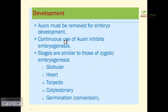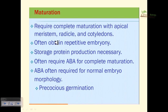The stages of somatic embryogenesis are similar to zygotic embryogenesis: globular, heart-shaped, torpedo, cotyledonary, then germination. During maturation, complete development with apical meristem, radicle, and cotyledons is required. Repetitive embryogenic cycles can occur. Abscisic acid production is important during maturation, acting as a signaling molecule to finally germinate the seed.